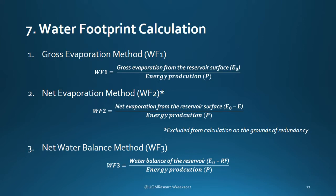The net evaporation method was excluded from further calculations. The third method, the net water balance method, considers the difference between direct evaporation and direct precipitation per unit energy produced. Hence, this may yield negative values if the climate is predominantly rainy.